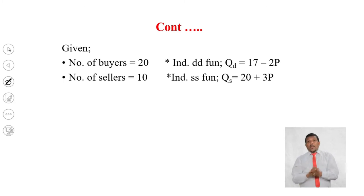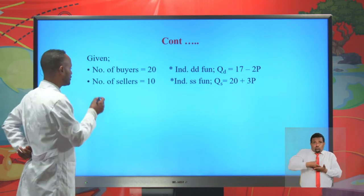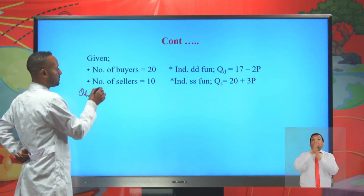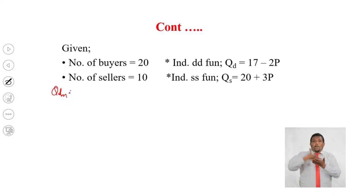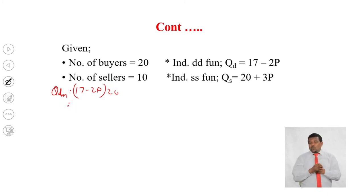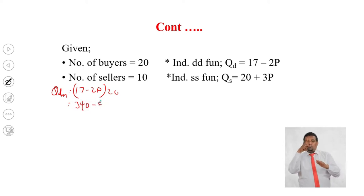First, if you have the number of buyers and the individual demand function, you can calculate the market demand function by multiplying the number of buyers by the individual demand function. That means 70 minus 2P multiplied by 20. Hence, the market demand is 70 times 20 equals 1400 — wait, the market demand function is 340 minus 40P.